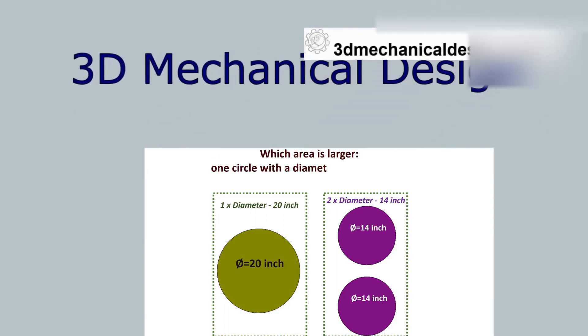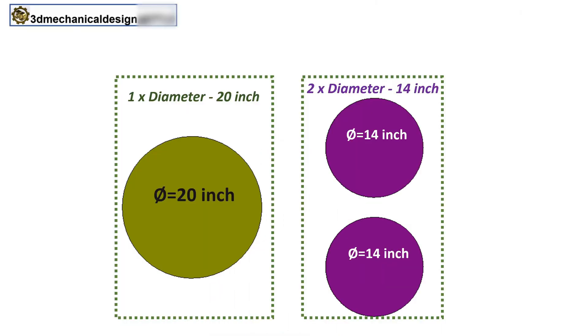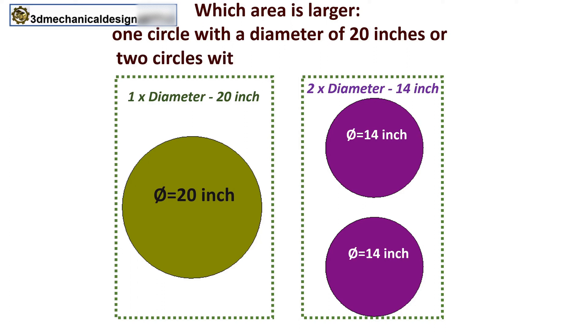Hi. 3D mechanical design. Which area is larger: one circle with a diameter of 20 inches or two circles with a diameter of 14 inches?